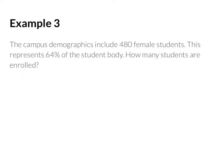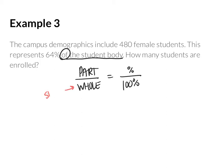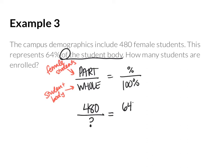For example 3, the campus demographics include 480 female students. This represents 64% of the student body. How many students are enrolled? We're still using the same relationship — part compared to a whole equals some percent out of 100% — adjusting the ratios as we go. Since female students represent 64% of the student body, the keyword 'of' tells us our whole amount is all of the student body, and the part is just the female students. We know there are 480 female students — that's our part. We don't know the total student body, but we know 64% are female students out of 100% total.